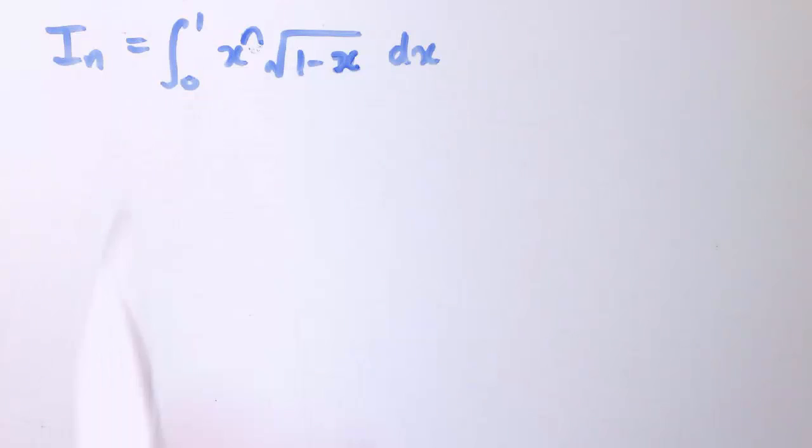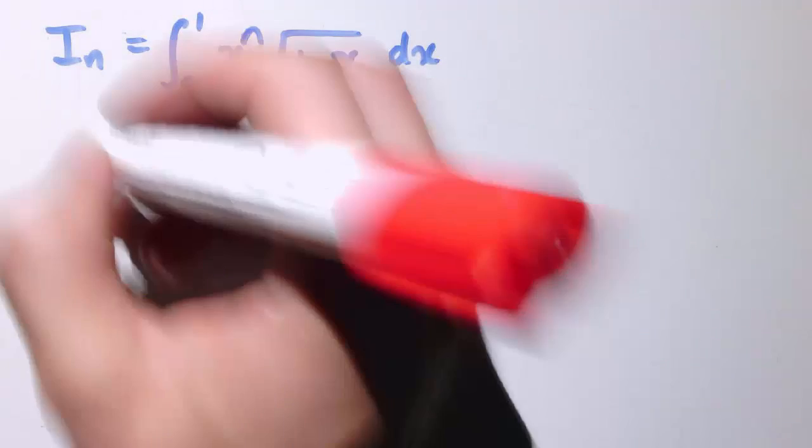I want to do the integral between 0 and 1 of x to the n times the square root of 1 minus x with respect to x. As before, we're going to integrate by parts.